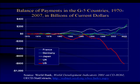This chart shows the top five industrial countries — France, Germany, Japan, the UK, and the US. As you can see, two countries have consistently been in surplus: Germany and Japan. And the United States has consistently been in deficit. And that deficit has grown, as has the surplus.